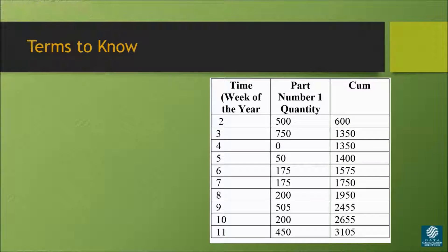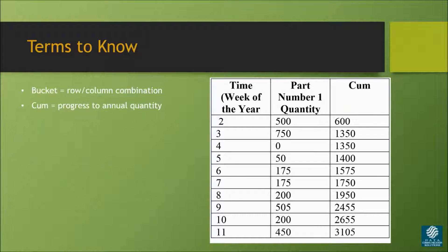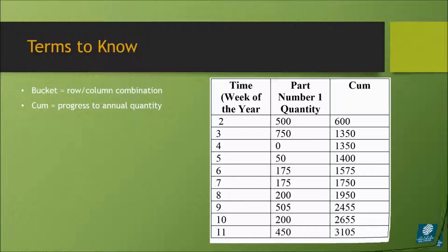When looking at these charts, there are some important terms to know. The first is bucket, which refers to the specific row and column combination. The second is cume, short for cumulative. This measures the progress to the annual quantity, as you can see on the right column of this chart.